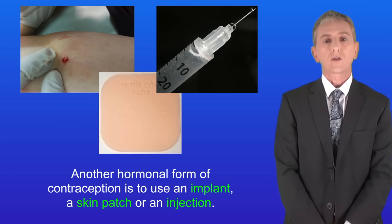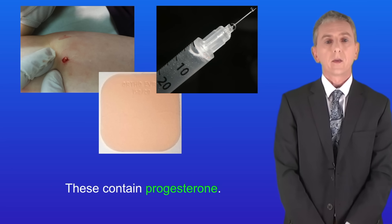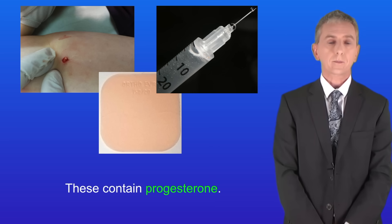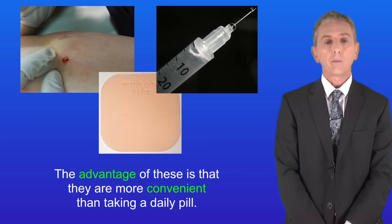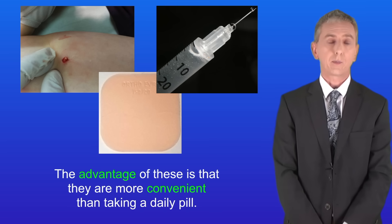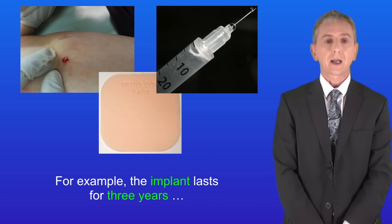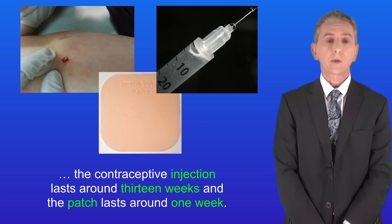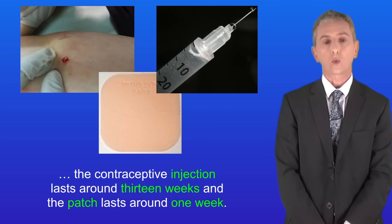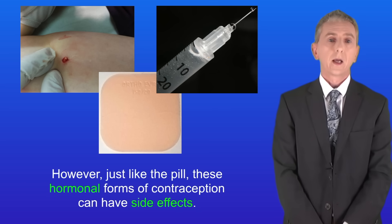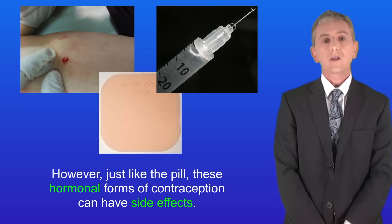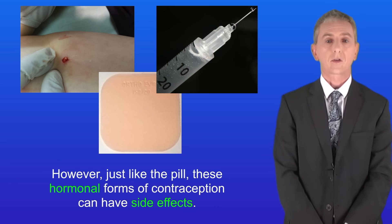Another hormonal form of contraception is to use an implant, a skin patch, or an injection. These contain progesterone, which stops eggs from maturing or being released. The advantage of these is that they're more convenient than taking a daily pill. For example, the implant lasts for three years, the contraceptive injection lasts around 13 weeks, and the patch lasts around one week.